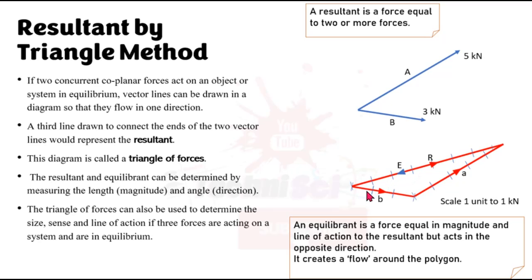Just like that. So let's go now, B to A and then the equilibrant creates that flow around the triangle. So that's something to bear in mind. So it's a force that is equal in magnitude and line of action. Remember now, line of action is representing the point through which the force is acting. So even though their directions are opposite, they're acting along the same line. So the equilibrant, it's equal in magnitude and line of action of the resultant, but it acts in the opposite direction. And a key thing to remember too, it creates a flow.